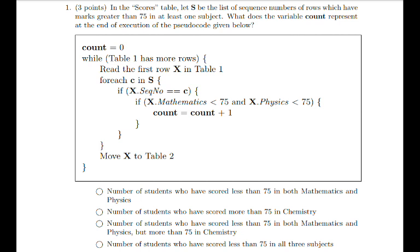From the given options, we can see that the correct option is option number 3: number of students who have scored less than 75 in both mathematics and physics, but more than 75 in chemistry. Thank you, learners.